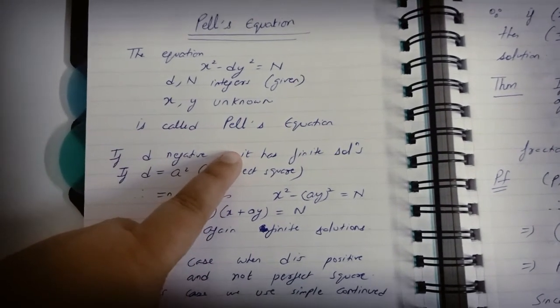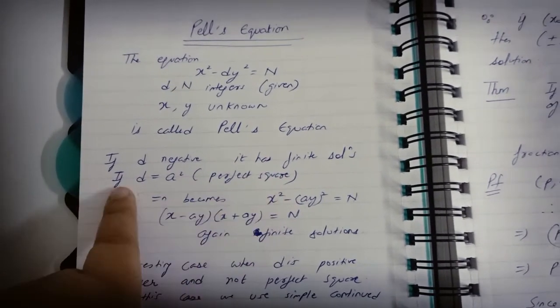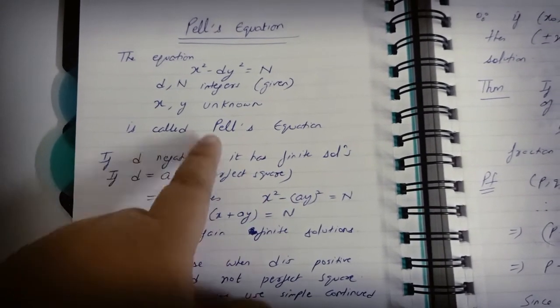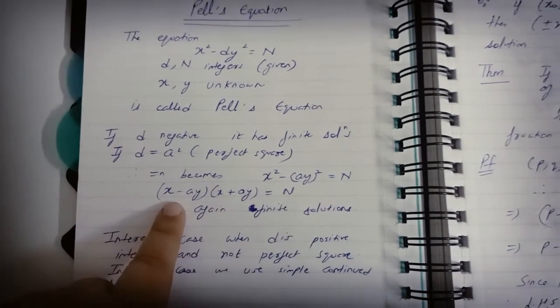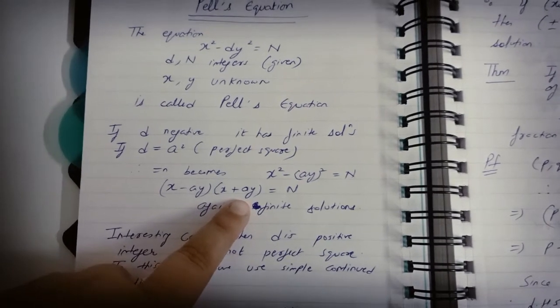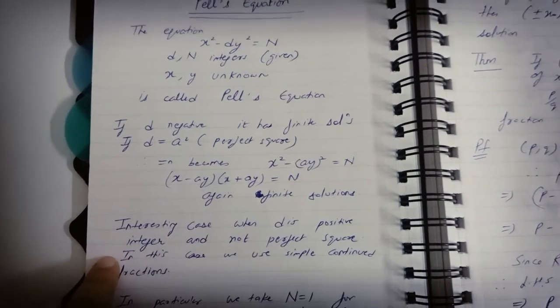If d is negative, it has finite solutions. If d equals a perfect square, then the equation becomes x² - (ay)² = n, which is (x - ay)(x + ay) = n. So again this has finite solutions.